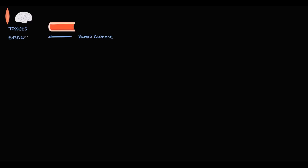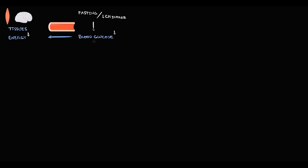In our blood we have glucose, which is the most valuable source of energy in our organism. Practically every cell in our body uses glucose as a source of energy. But what happens during fasting or with decreasing carbohydrate intake? In these circumstances, blood glucose level decreases, and the body must find a way to fix this problem.